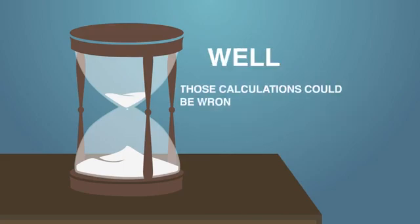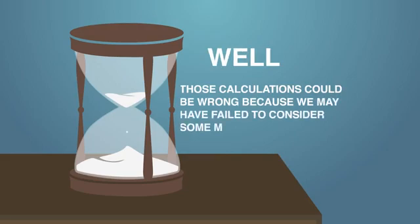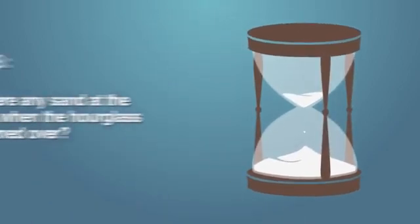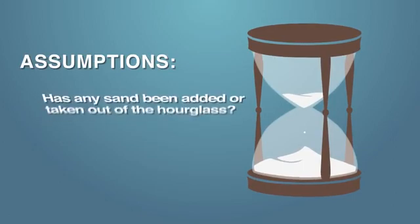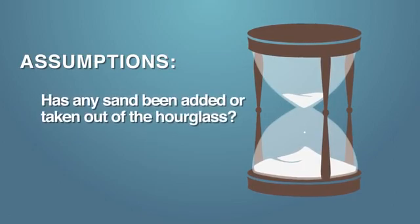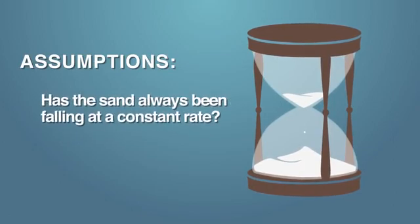Well, those calculations could be wrong, because we may have failed to consider some major assumptions. Like, was there any sand at the bottom when the hourglass was turned over? Has any sand been added or taken out of the hourglass? Has the sand always been falling at a constant rate?